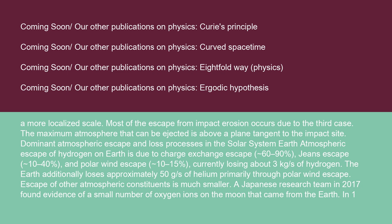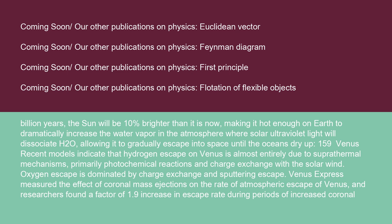A Japanese research team in 2017 found evidence of a small number of oxygen ions on the Moon that came from the Earth. In one billion years, the Sun will be 10% brighter than it is now, making it hot enough on Earth to dramatically increase the water vapor in the atmosphere, where solar ultraviolet light will dissociate H₂O, allowing it to gradually escape into space until the oceans dry up.